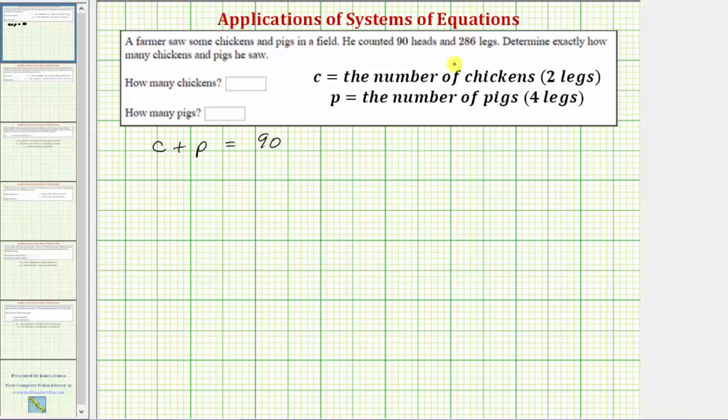But because he also counted 286 legs, and again each chicken has two legs and each pig has four legs, 2c would give us the number of chicken legs plus 4p would give us the number of pig legs. And the sum must equal 286.